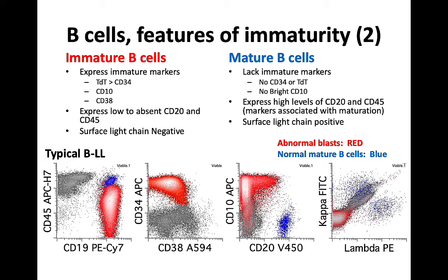Let's review the immunophenotypic features that can help us distinguish an immature B-cell population from a mature B-cell population. Immature B-cells will express markers associated with immaturity — they're often positive for TDT and may be positive for CD34 as well. They'll often have bright CD10 and may be positive for CD38. When it comes to more mature markers like CD20 and CD45, these are usually either very low or absent, and surface light chains should not be expressed.